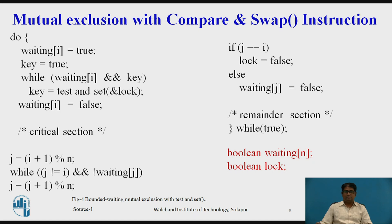The variable waiting[i] can become false only if another process leaves its critical section. Only one waiting[i] is set to false, maintaining mutual exclusion. When a process exits the critical section, it either sets lock to false or sets waiting[j] to false, both of which allow a waiting process to enter its critical section.